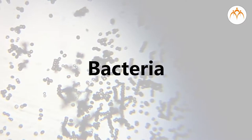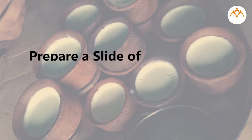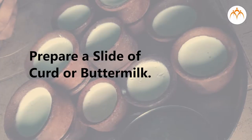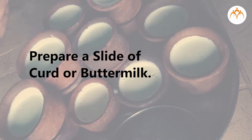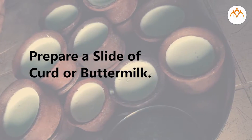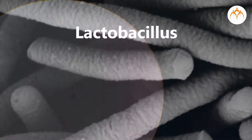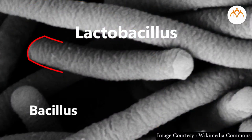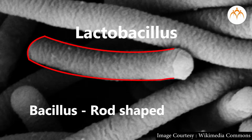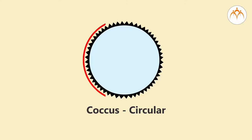The first group is bacteria. Before I tell you about bacteria, let's do a small activity — we will prepare a slide using curd or buttermilk to observe bacteria. The name of bacteria present in buttermilk is Lactobacillus. The word 'bacillus' indicates that they are rod-shaped. Coccus bacteria are circular.